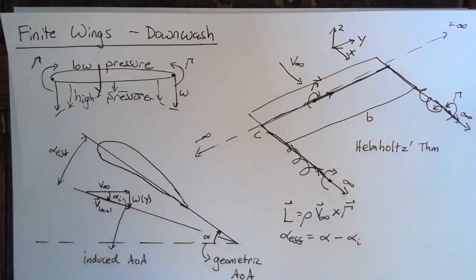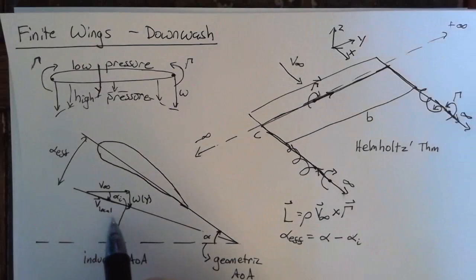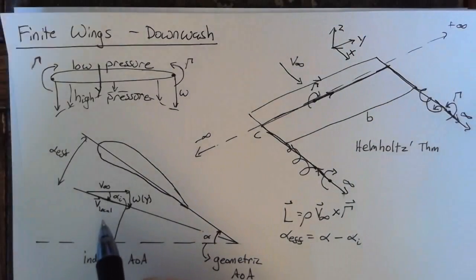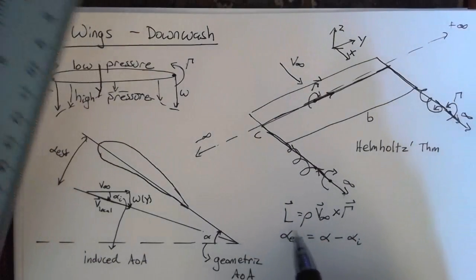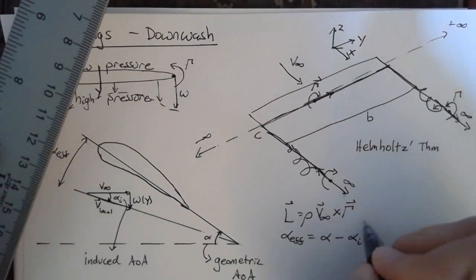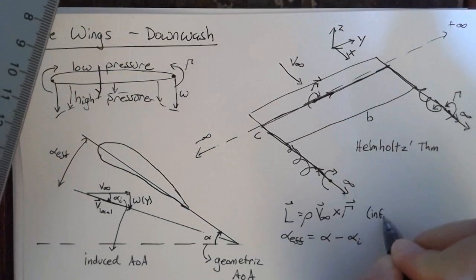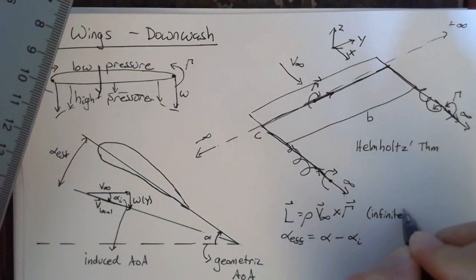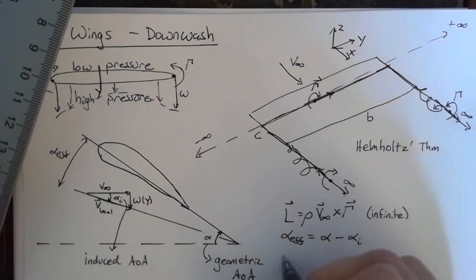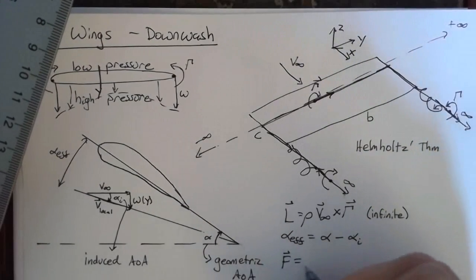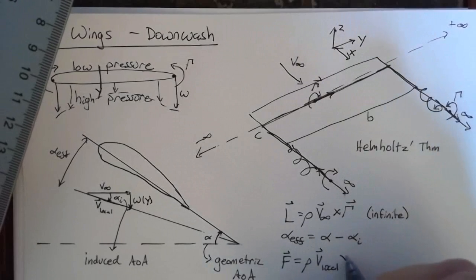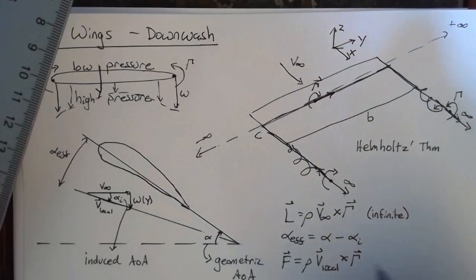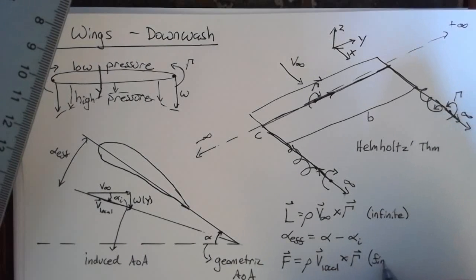But with this, we're changing the local velocity, the local incoming velocity. And so our new lift vector, our new force vector, so let's say that this is for infinite wings. And then for finite wings, we have a force that is equal to rho times v-local crossed with, once again, our gamma. So this is for finite wings. This is just recognizing the fact that our local velocity is different than our uniform velocity.